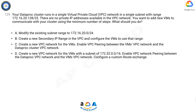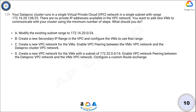B: Create a new secondary IP range in the VPC and configure the VMs to use that range. C: Create a new VPC network for the VMs, enable VPC peering between the VM's VPC network and the Dataproc cluster VPC network. D: Create a new VPC network for the VMs with a subnet of 172.32.0.0/16, enable VPC network peering between the Dataproc VPC network and the VM's VPC network, and configure a custom route exchange.